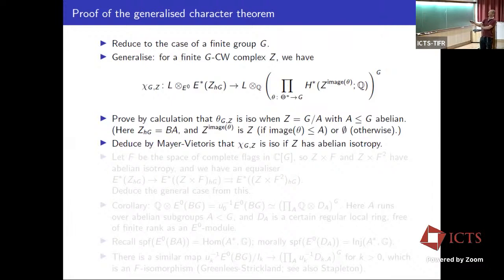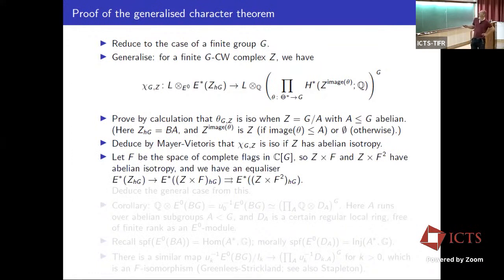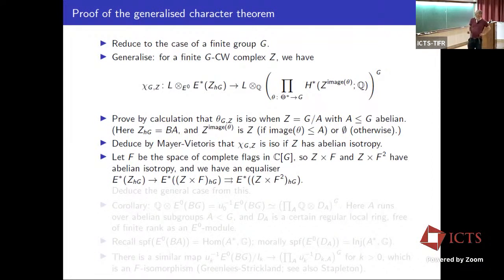The advantage of working with a general G-CW complex Z is that we can use Mayer-Vietoris sequences as we build up Z by cells. The conclusion is: if Z has abelian isotropy — i.e., lies in the thick subcategory generated by the G/A's — then χ is still an isomorphism. When proving E^*(BG) is finitely generated, we introduced a space of complete flags in G and showed Z × F and Z × F^2 have abelian isotropy, with an equalizer diagram. Since χ is an isomorphism for those spaces, a straightforward argument from the equalizer diagram gives it for Z too.